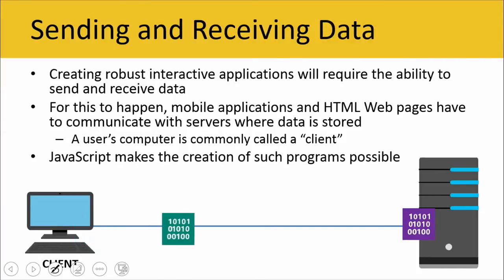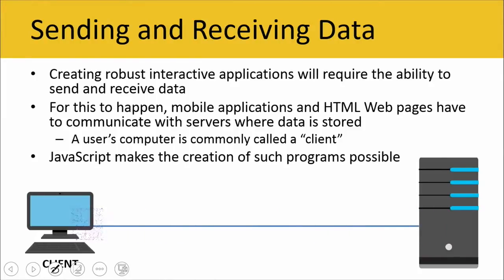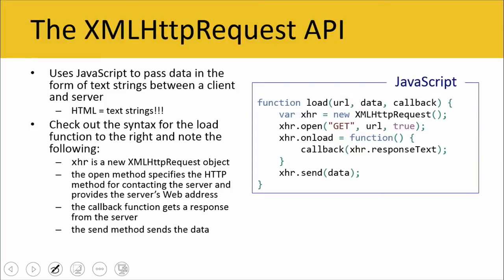So here you've got a computer sending data to a server and then a server sending data back. To further facilitate this, we can use the XML HTTP Request API. It uses JavaScript to pass data in the form of text strings between a client and a server. HTML is made of text strings — all of our tags, all of our keywords — they're all text strings. So the XML HTTP Request API actually just goes ahead and sends those tags back and forth.